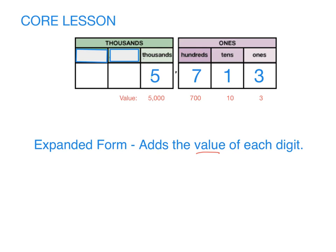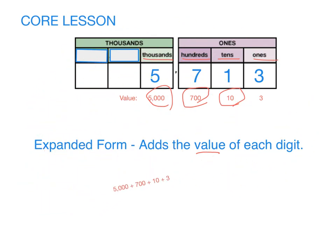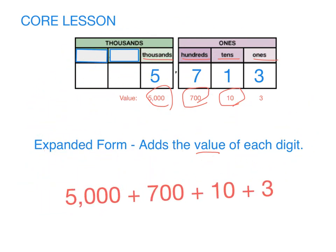The 5 is in the thousands place, so it has a value of 5,000. The 7 is in the hundreds place, so it has a value of 700. The 1 is in the tens place, so it has a value of 10. And the 3 is in the ones place, so it just has a value of 3. So what does this number look like in expanded form? 5,000 plus 700 plus 10 plus 3.